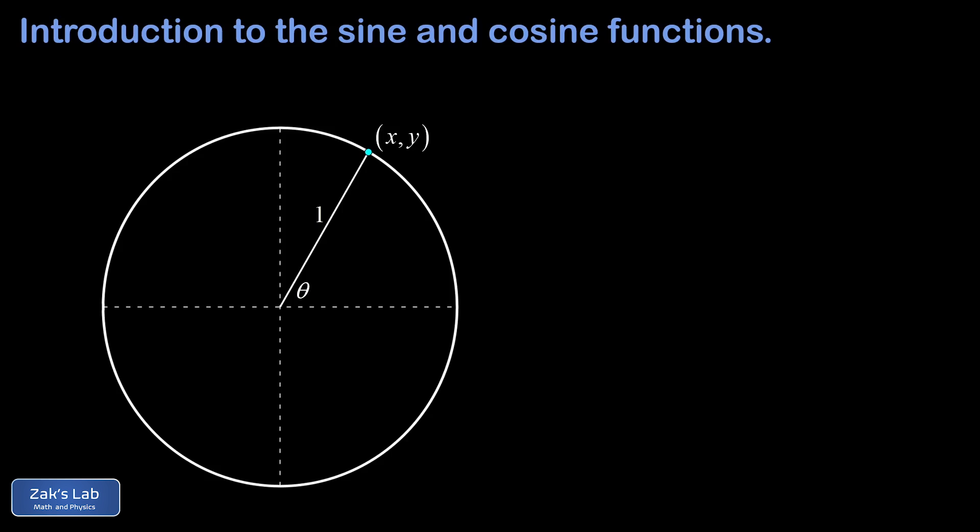The definitions of sine and cosine are actually really simple. Cosine theta is just the x-coordinate of that point on the unit circle, and sine theta is just the y-coordinate of that point on the unit circle. This allows us to immediately start computing some sines and cosines of a few special angles.